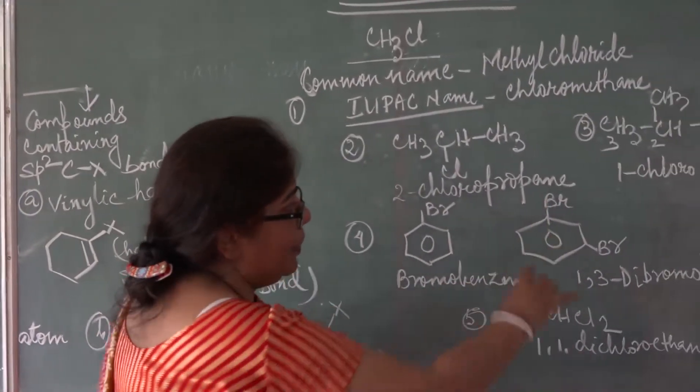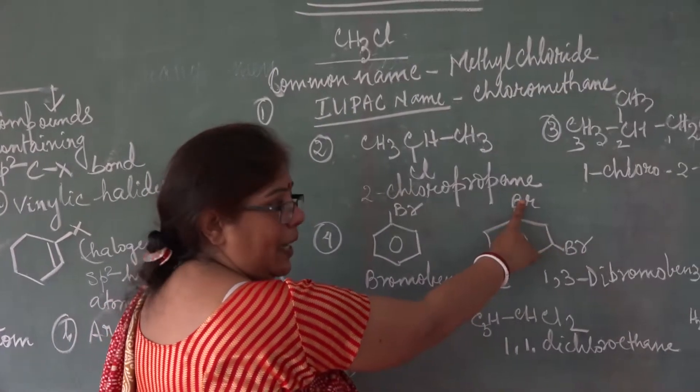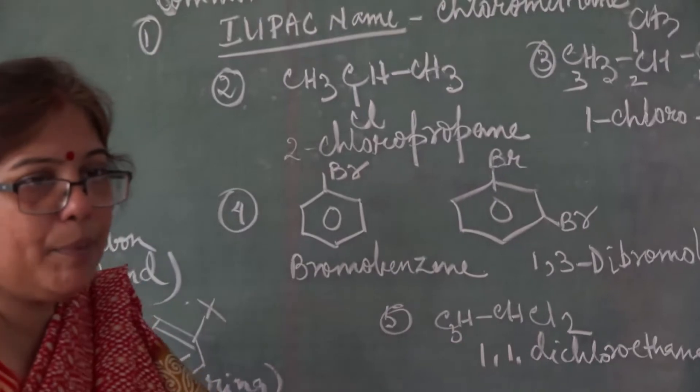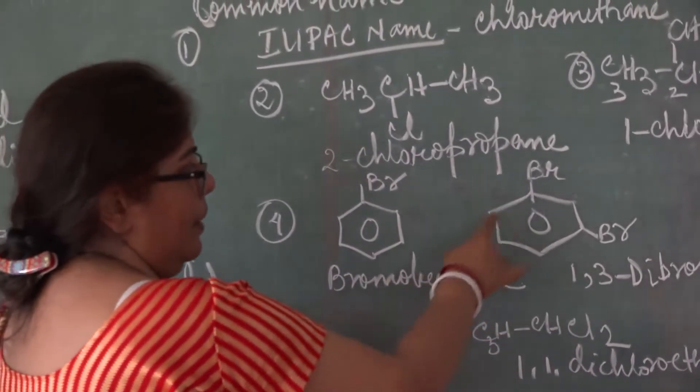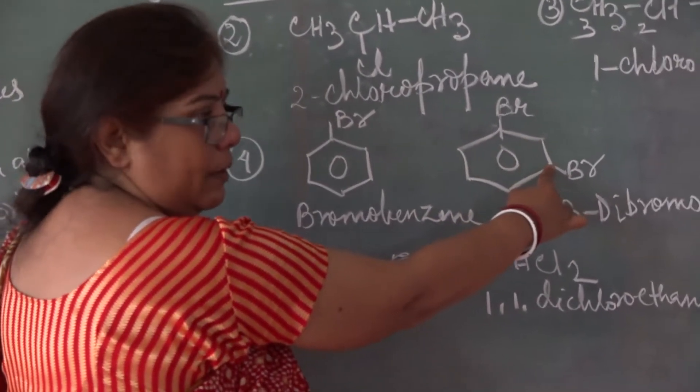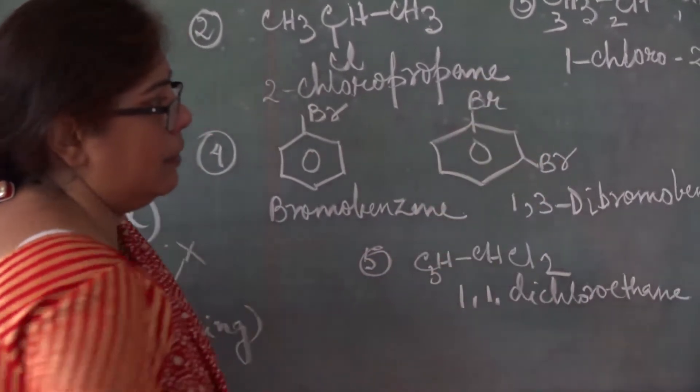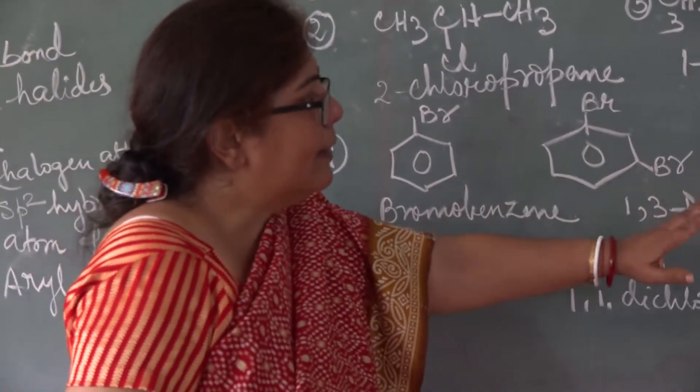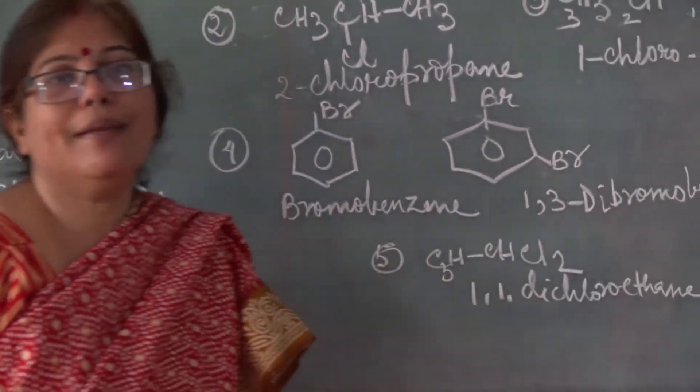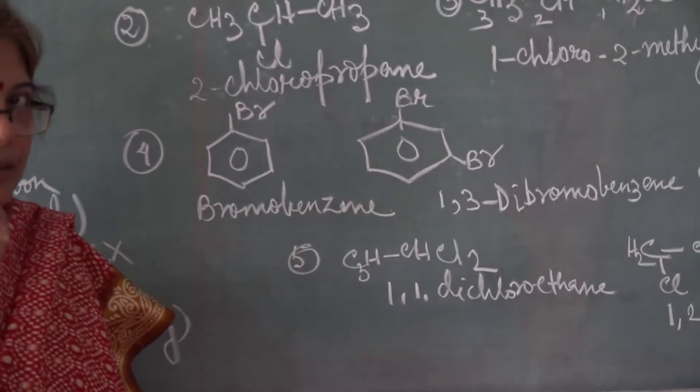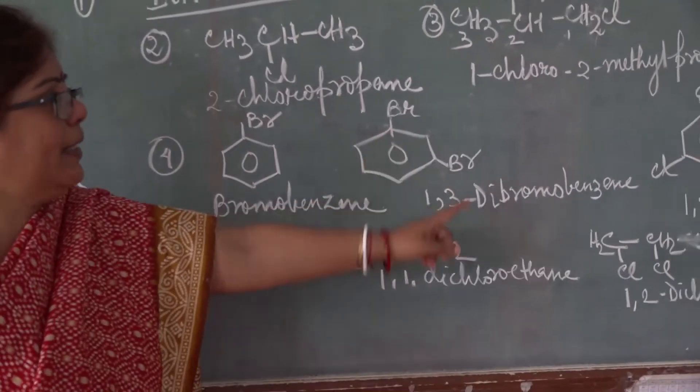Next, what is the name? See in that position? First position, Br. Second position, nothing. Third position, Br. So you have to put the numbers directly attached to the benzene ring. So what will be the name? One, three. One, three. How many bromines? Two. One, three, dibromobenzene.